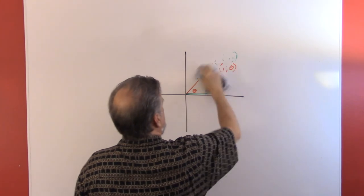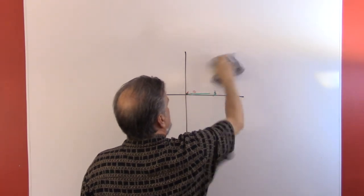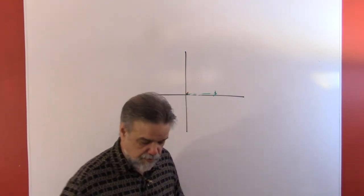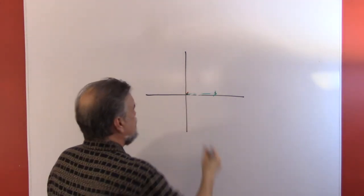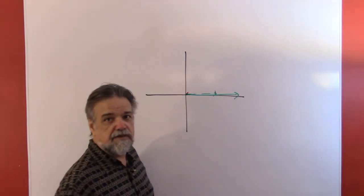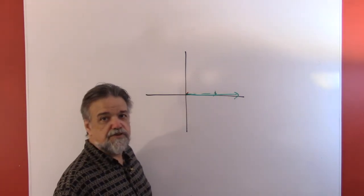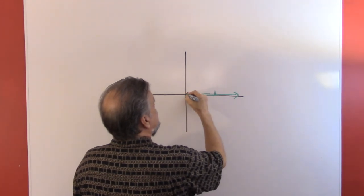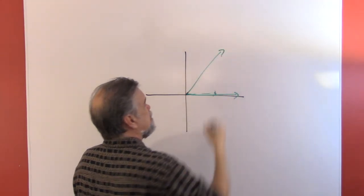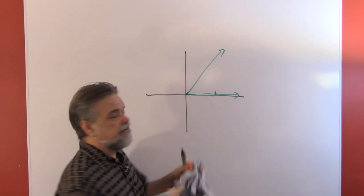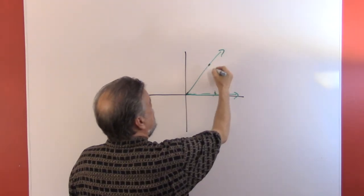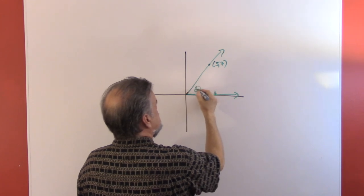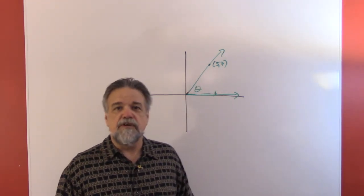You have an angle, it's in standard position—so that means the initial side is just headed out the positive x-axis—and then you have the terminal side here, and it goes through, I don't know, let's say the point (5, 7). And this is theta here. What we asked you back then was: tell me what the sine of theta is, what the cosine of theta is, and what the tangent of theta is.